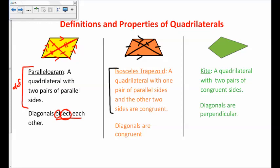Next is a kite — the same shape as a kite flying in the sky. A kite is defined as a quadrilateral with two pairs of adjacent congruent sides: those two sides are congruent, and those other two sides are congruent. The important property about the diagonals in a kite is that the diagonals are perpendicular. Once you have those three written down, make sure you have space for three more on the next page.